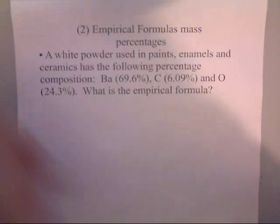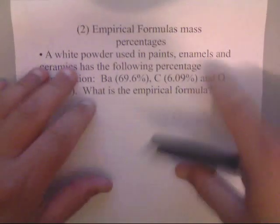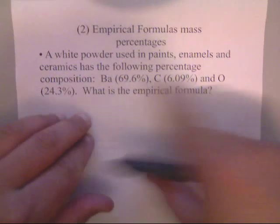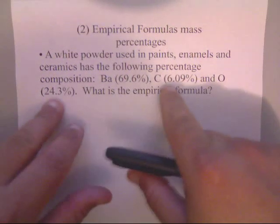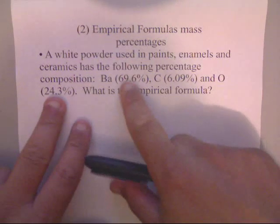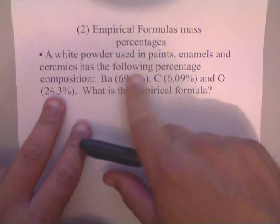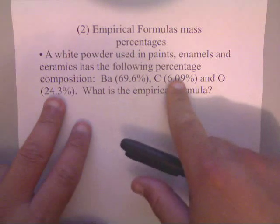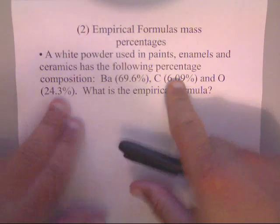Alright guys, in this video I'm going to show you how to calculate empirical formulas given the percent compositions of each one. Now once again, you want to make sure that these add up to 100, so let's just do some quick math. See that's 70, 76, and 24, that's 100, so yeah, it's right.